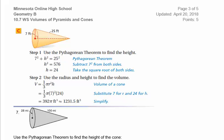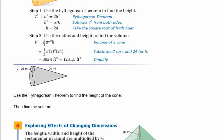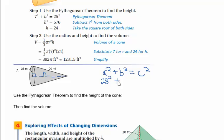You will need to do that in number 7. We don't yet know the height of the cone, which goes from the center of the base circle to the vertex. The first step is to use the Pythagorean theorem: a squared plus b squared equals c squared. One leg is 28, the hypotenuse is 100. Square both, subtract, then take the square root to get the height. Don't forget to take the square root at the end.